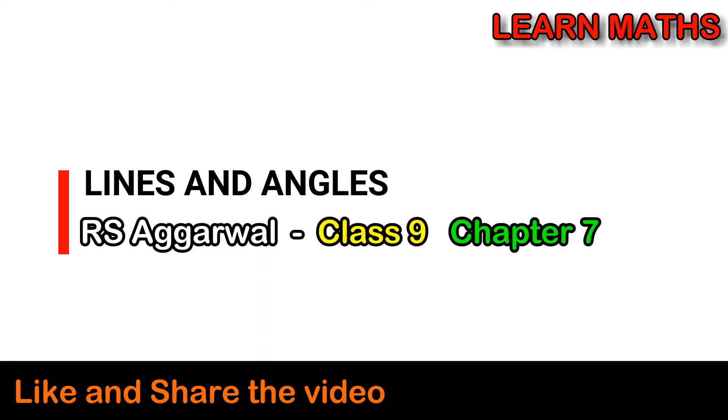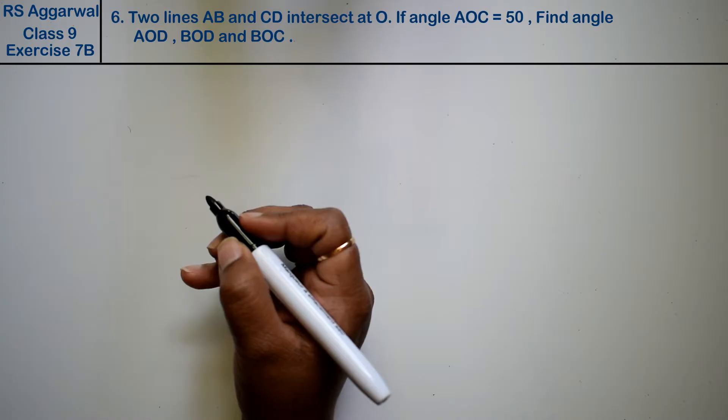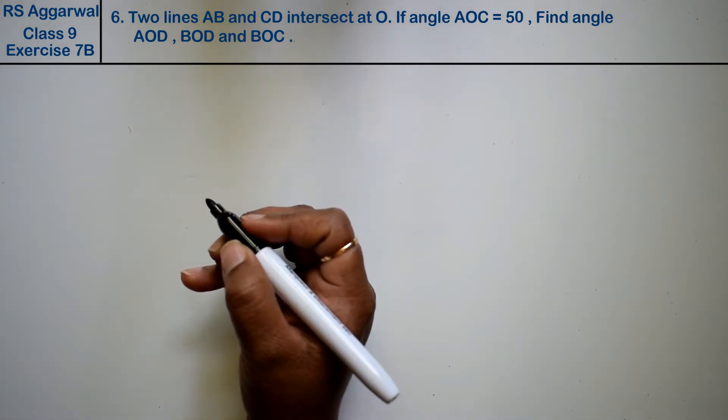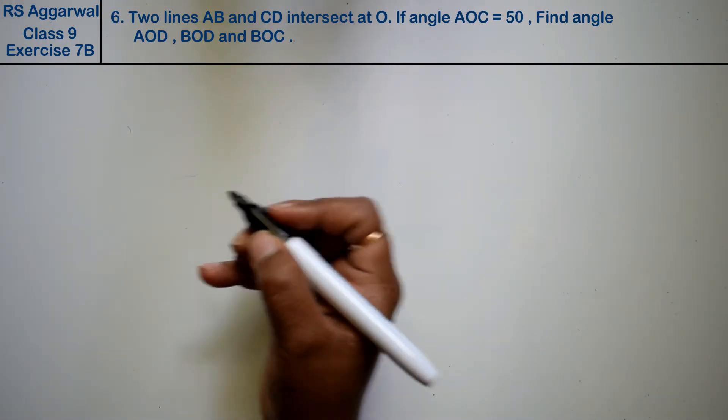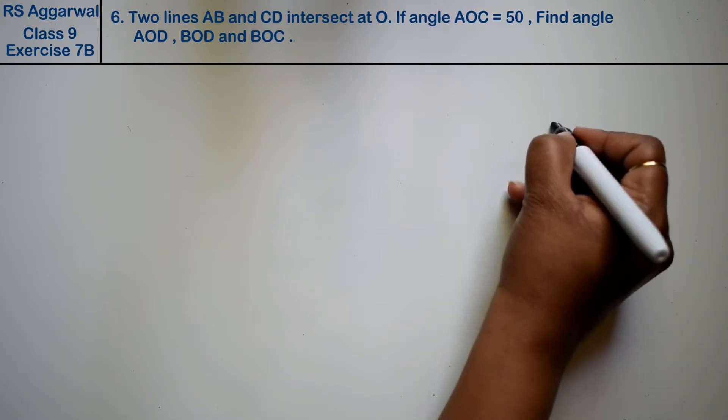Let's do question number 6 of exercise 7b, that is Lines and Angles. Question number 6 is: two lines AB and CD intersect at O. Make the figure for each question — please make it in the exam.